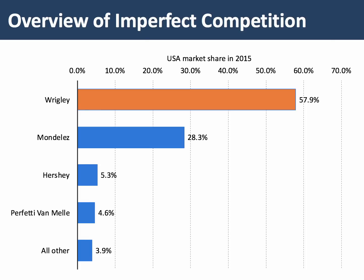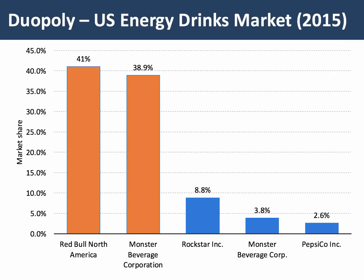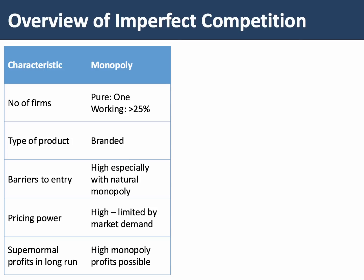Here's a good example of a dominant firm. In the US market for chewing gum, Wrigley's has nearly 60% of the market. There are some other big players, but Wrigley is far ahead. And if you define the market narrowly as the market for energy drinks in the United States, then we have a duopoly dominated by Red Bull and Monster Beverage. Now there are many different market structures which come under the umbrella term imperfect competition. Let's do a quick overview of three of them: monopoly, oligopoly, and monopolistic competition.